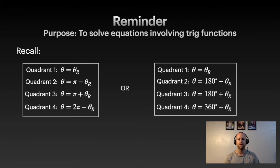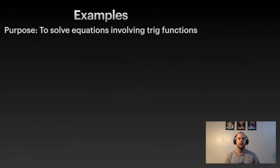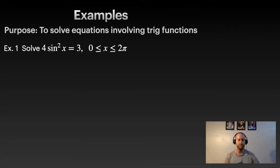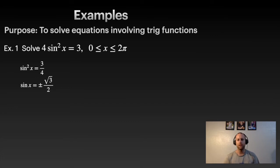Let's try examples. The first example is to solve 4sin²x = 3, between 0 and 2pi, solving for x. First, we need to isolate sin x: divide both sides by 4, then take the square root. Notice that when we take the square root we get a plus or minus, so we need to deal with these two cases separately.